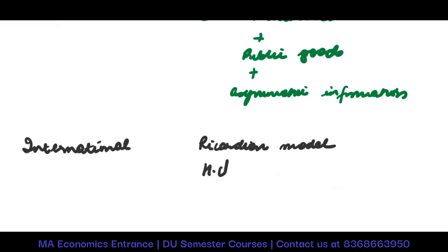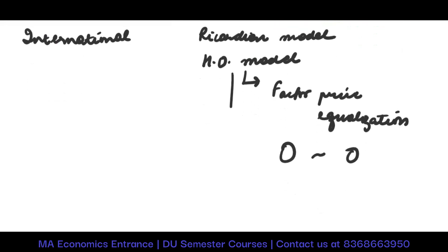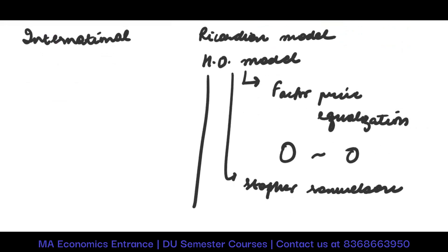The third area you should be doing is international trade — not in much detail, but the fixed things. You have to do the Ricardian model and the Heckscher-Ohlin model. In Heckscher-Ohlin, you should be focusing on three main things: the Factor Price Equalization theorem, the Stolper-Samuelson theorem, and the most important — the Rybczynski effect.